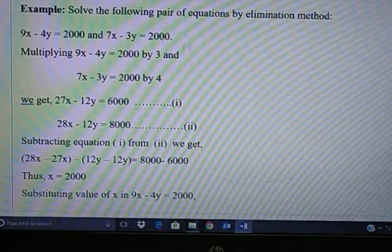In elimination method we have to equate at least one variable to the same values. If you want to equate the x variable, you have to multiply here with 7, so 9 times 7 is 63, and here 7 times 9 is 63. Then only you can get equal values of x variable.